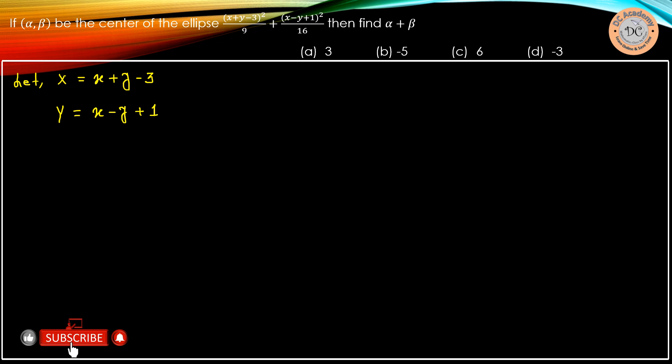Therefore, the equation of the ellipse reduces to a form which is well known to us. It reduces to X squared divided by 9 plus Y squared divided by 16, and that's equal to 1.